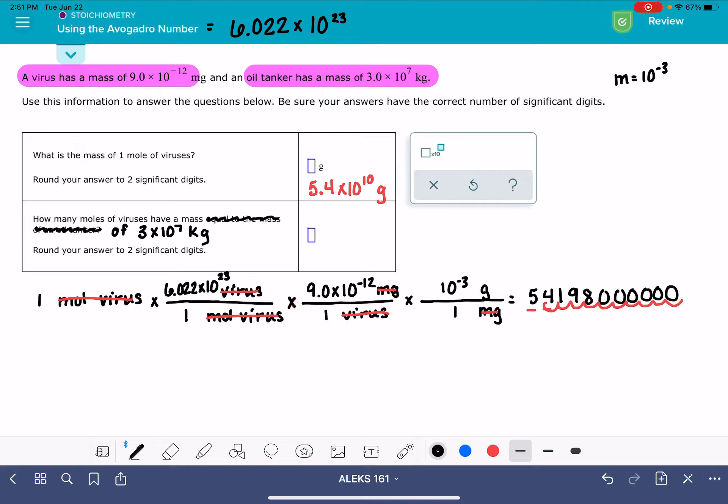So the way that we're going to solve this problem is we're going to say, okay, let's say that I have 3 times 10 to the 7 kilograms of viruses. That's a lot. And I want to know how many moles that is. So I want to convert this many kilograms of a virus into moles.